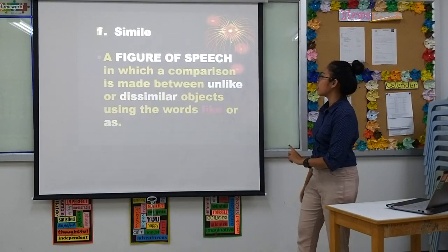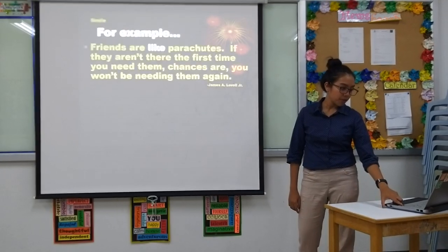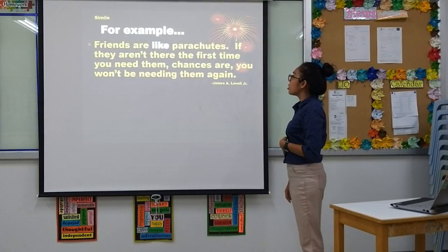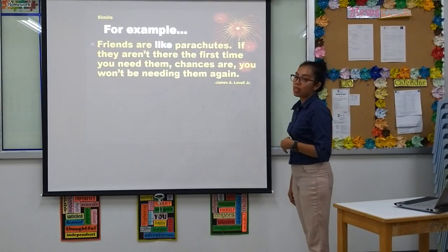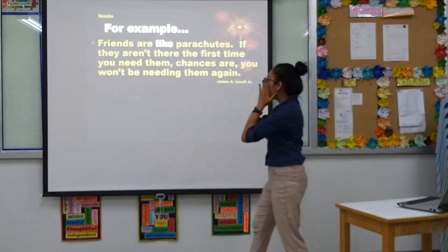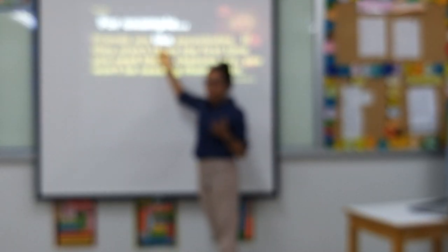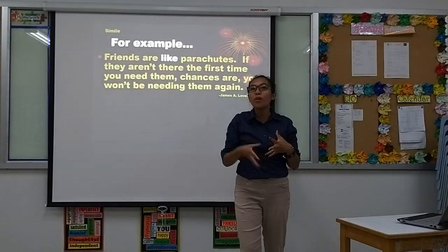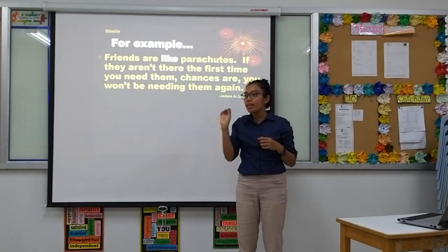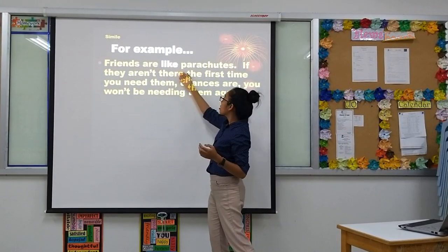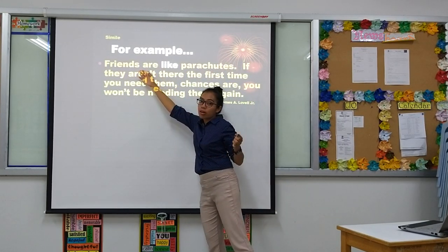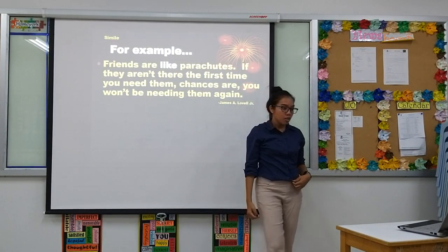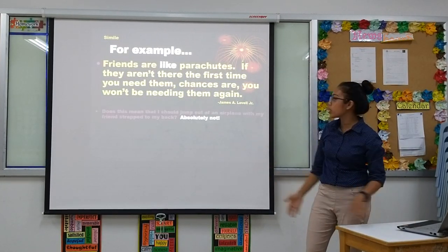I'll give you an example. 'Friends are like parachutes. If they aren't there the first time you need them, chances are you won't be needing them again.' As you can see, 'like' is highlighted there. Simile is very easy to remember because simile will always use the words 'like' or 'as.' Friends are being compared to the parachute using the word 'like.' So what does it mean?